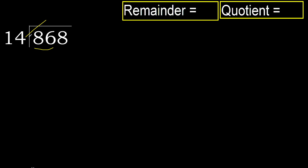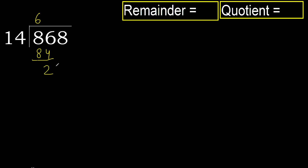14 multiplied by 6 is 84, which is not greater than 86. 86 minus 84 is 2. Next, bring down: 28.